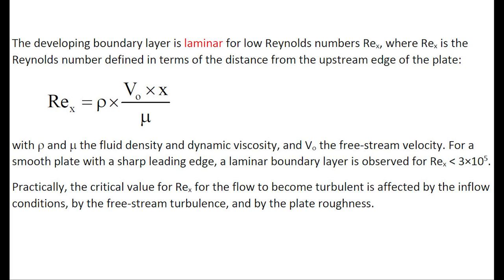The developing boundary layer is laminar at low Reynolds number, with the relevant definition of the Reynolds number being shown here. The critical value of the Reynolds number for which the flow becomes turbulent is affected by the inflow condition, by the free stream turbulence, and by the plate roughness.